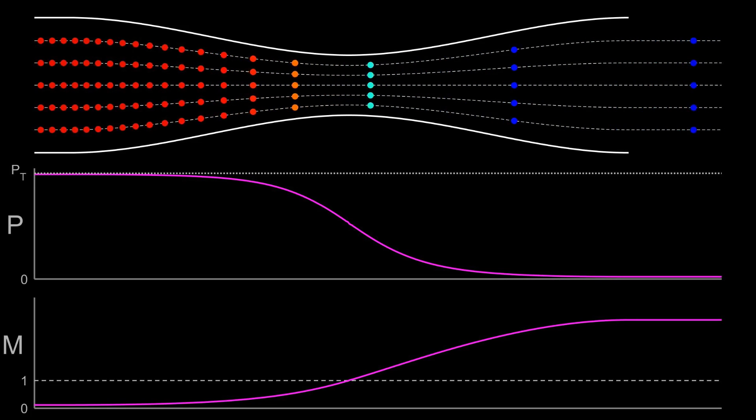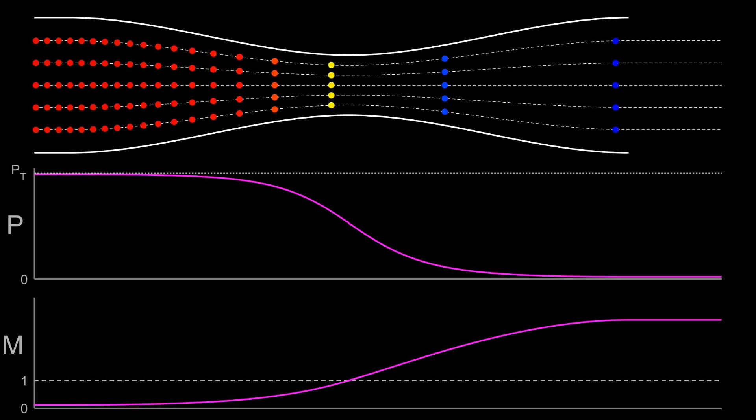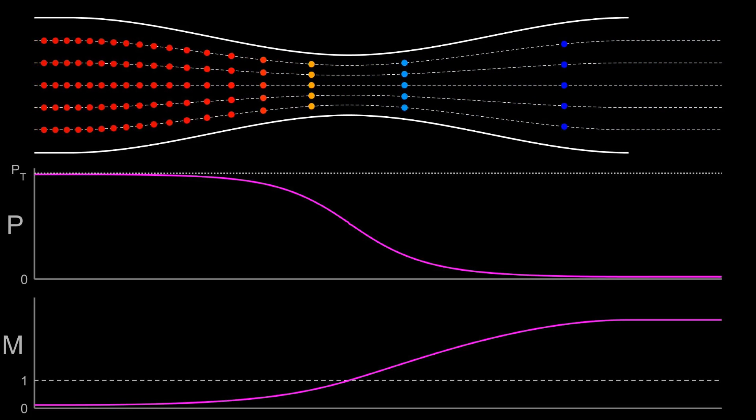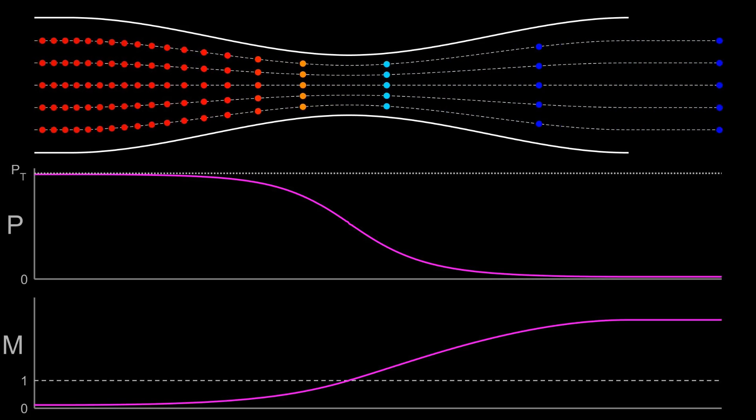As the supersonic flow moves down the nozzle, the area gets larger, and the particles communicate this to each other vertically. Due to conservation of mass, the particles expand to fill the larger cross-section, and the pressure drops. From conservation of momentum, a reduction in pressure means an increase in velocity. The flow will keep accelerating as we keep increasing the area.